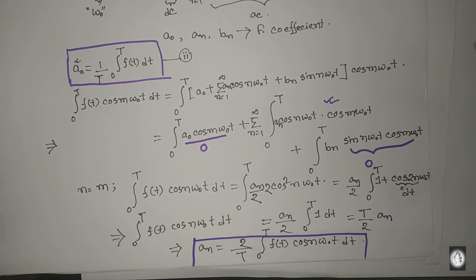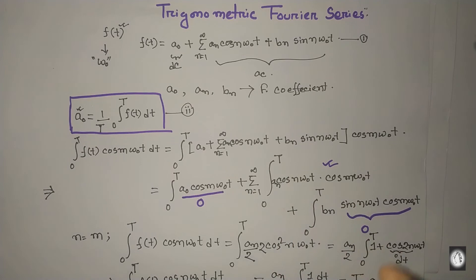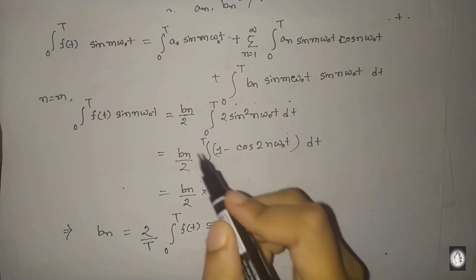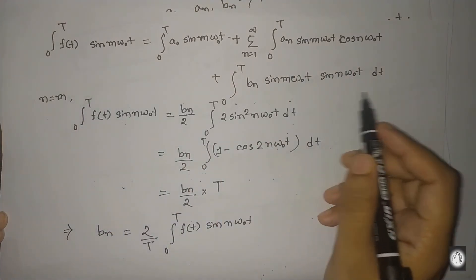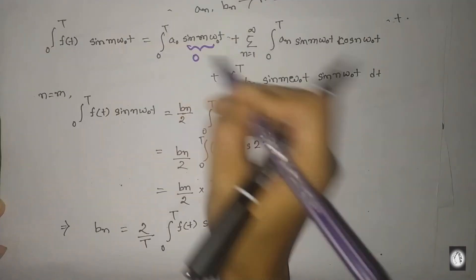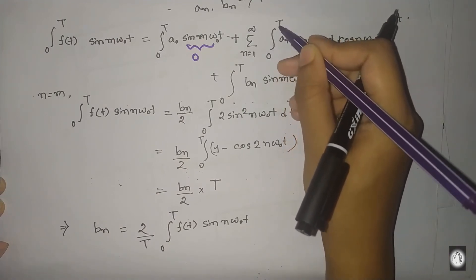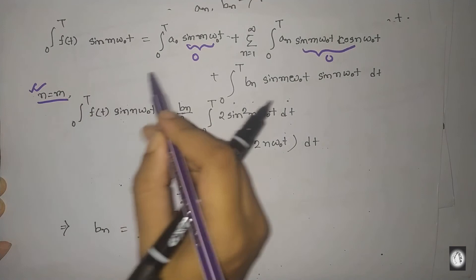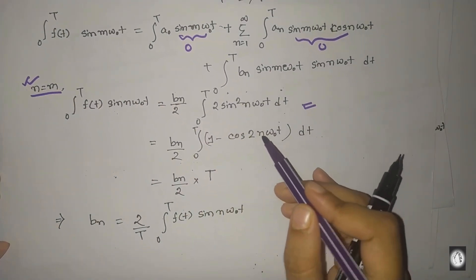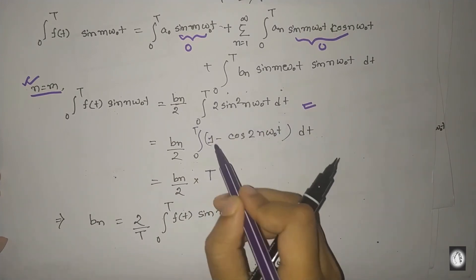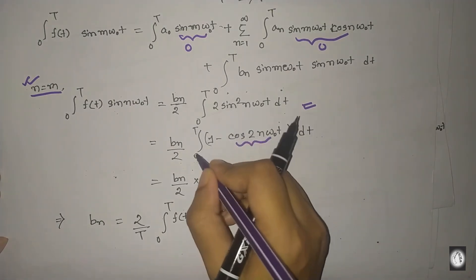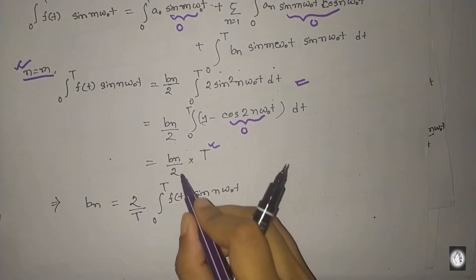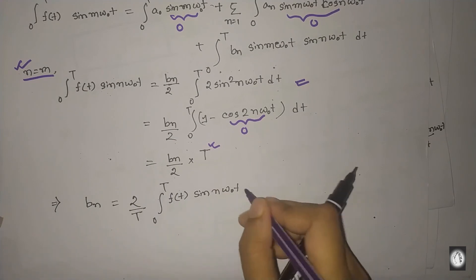In the same way, multiplying the original equation by sin(mω₀t) gives us the expression for b_n. The first part is zero, sin(θ)cos(θ) integrates to zero, and when n equals m, using the identity 2sin²(θ) = 1 − cos(2θ), the integral from 0 to T of 1 dt equals T.